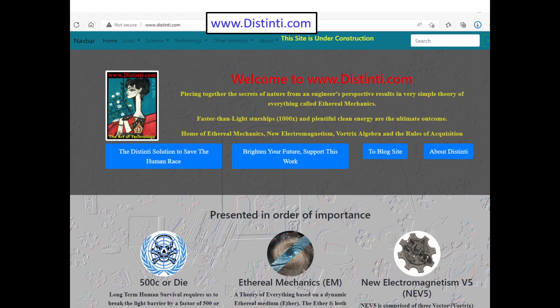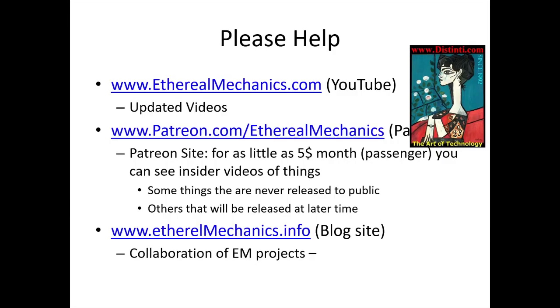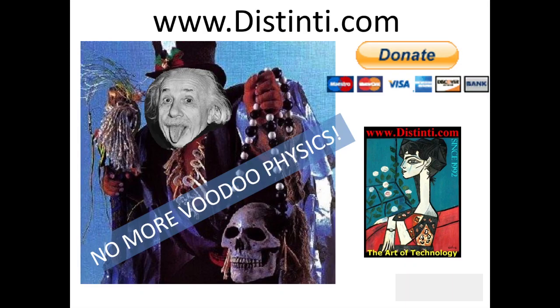If you want to help out or see the transvariant paper, you go to the website distinti.com. You go to the ethereal mechanics link here. On that page you're going to find the link to the transvariant paper. If you want to help support this work, you go to this link here. That'll take you to the Patreon site. We also have a blog site. If you want to see why this work is important, you just click either this or this. That'll show you why we have something much bigger than climate change as our problem. Thank you. No more voodoo physics.